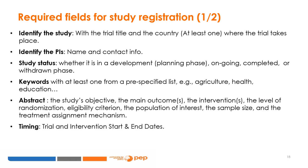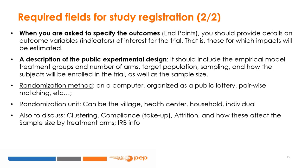Provide a timeline with the trial and intervention start and end dates. When specifying outcomes, provide details on outcome variables or indicators for which impacts will be estimated. A description of the experimental design should include the empirical model, treatment groups, and number of arms or variants of the treatment, as well as the target population, sampling, how subjects will be enrolled, and the sample size. The randomization method may be computer-based and organized as a public lottery or may require pair-wise matching. The randomization unit can be the village, the health center, household, or an individual.